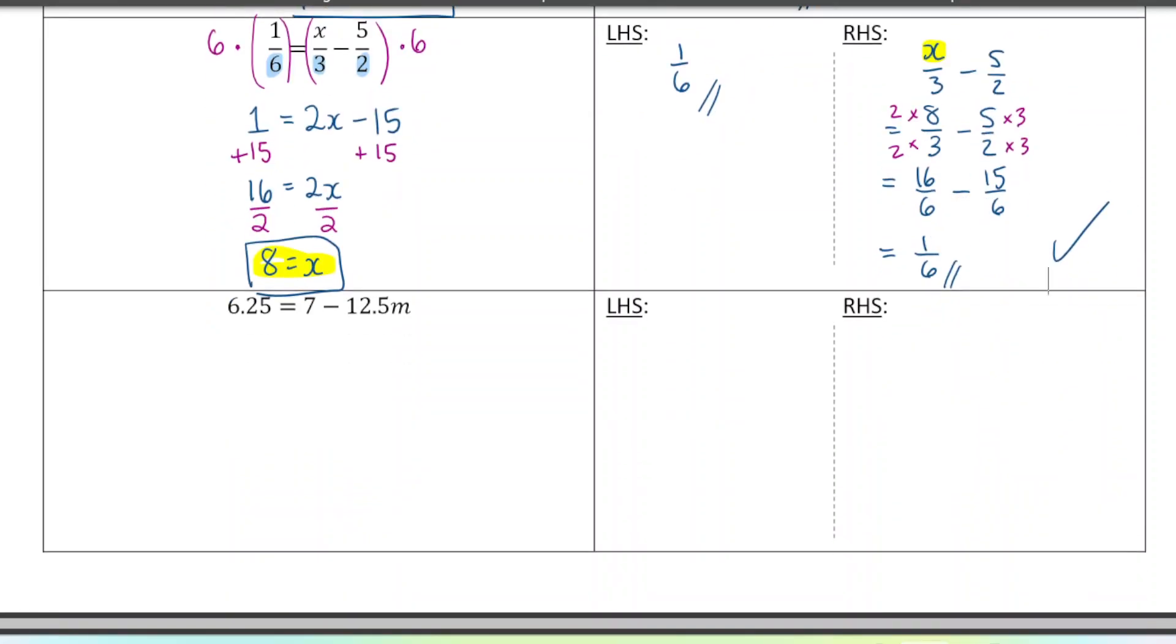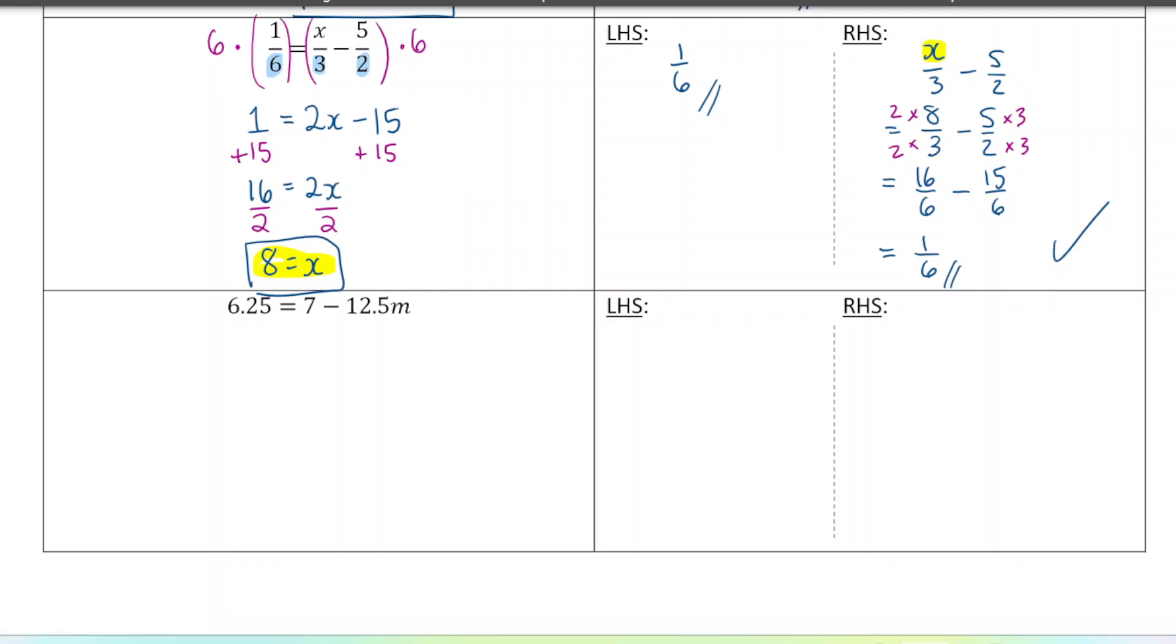Last one. This one, we could get rid of the decimals by multiplying both sides. You can kind of choose, it's up to you. If you feel comfortable working with the decimals, you can. I'll just work with them here and see how that goes. So first thing I'm going to do is get rid of that positive 7 on the right-hand side, because I'm trying to isolate for m. So I'm going to subtract 7. So I have 6.25 minus 7, which is negative 0.75, negative 12.5m, and then I'm going to divide by negative 12.5. Use a calculator for that, and I get 0.06 equals m.